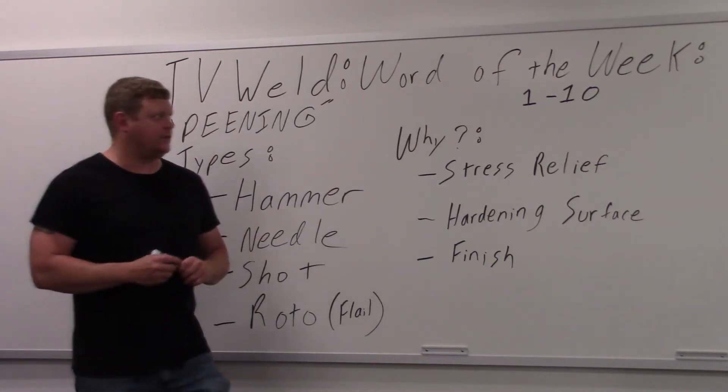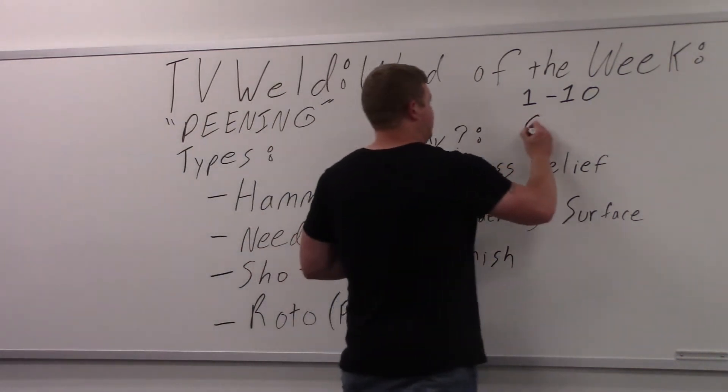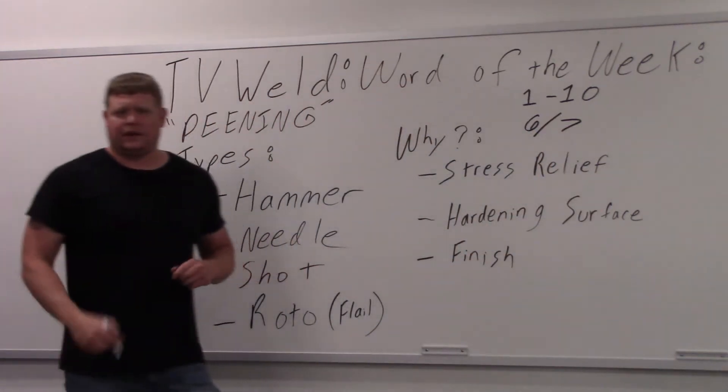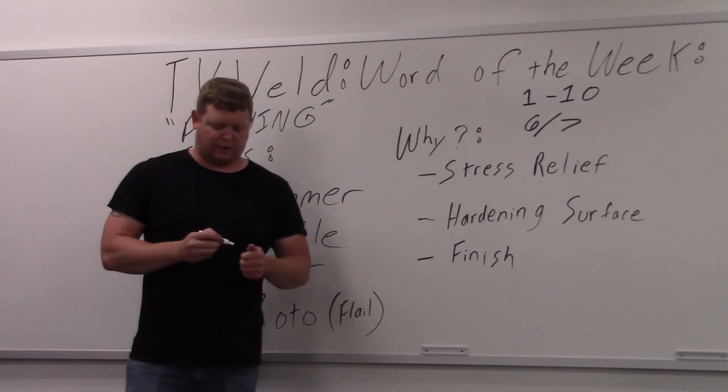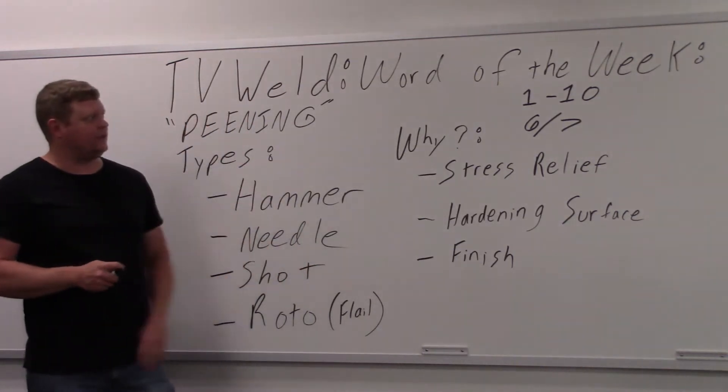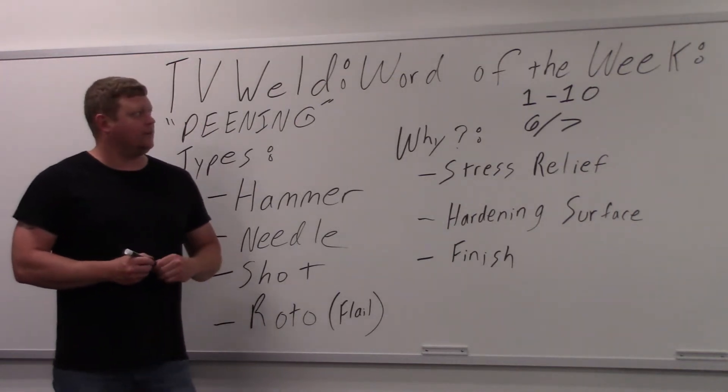You probably should know what it is. That being said, if you haven't ever welded high-carbon steel or cast iron, something that requires peening, you probably don't know what it is. So it's a six or seven. You definitely should know what it is, but it's not a huge deal if you don't, especially if you're new to the welding field.